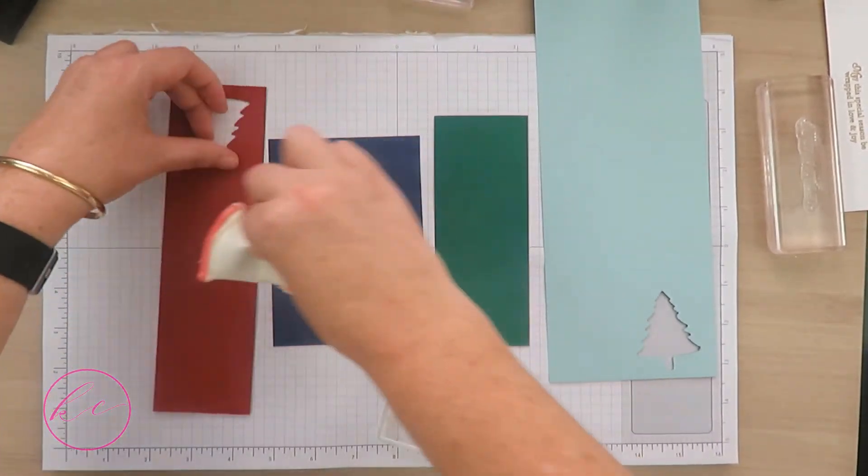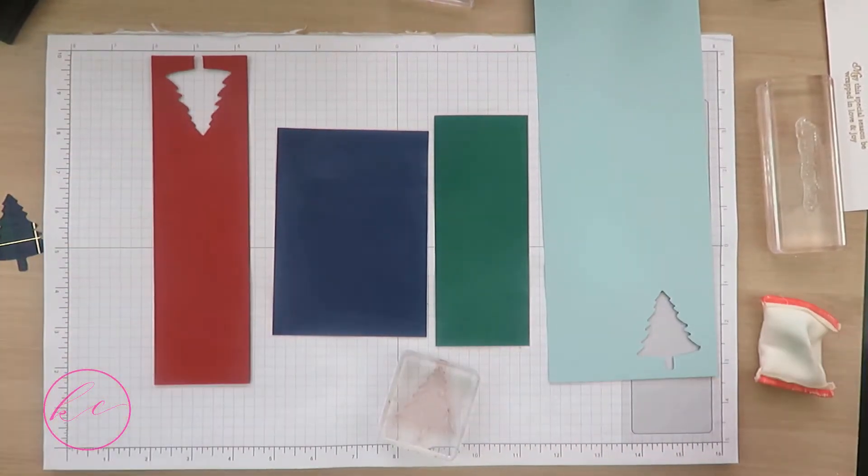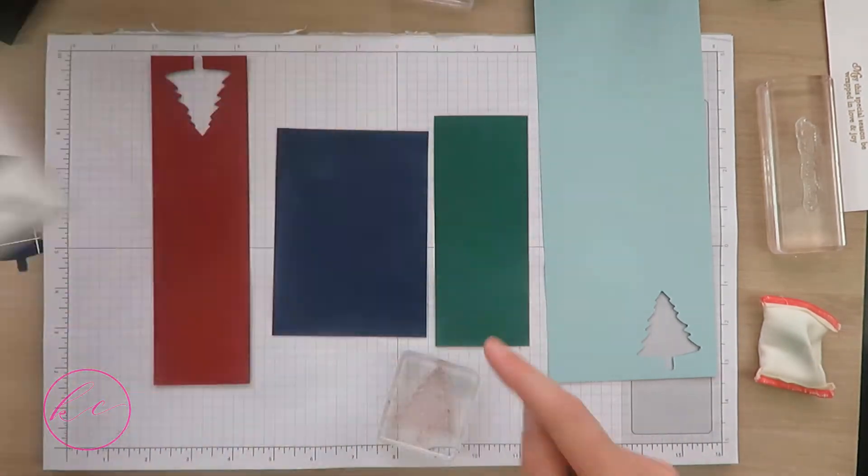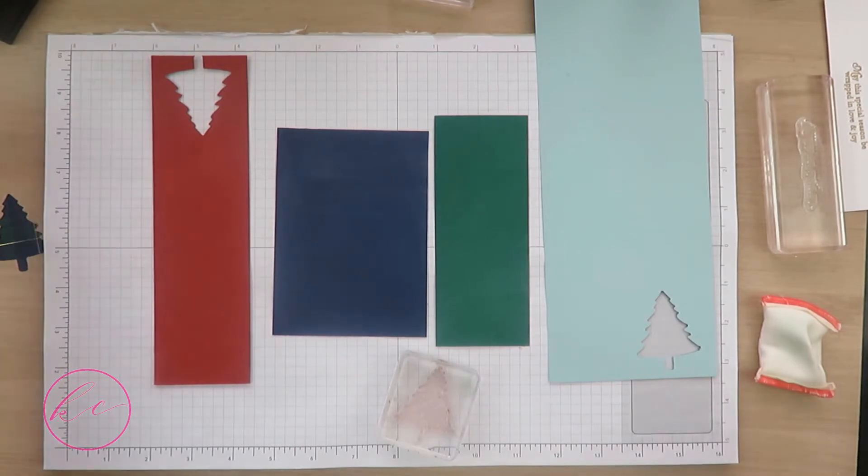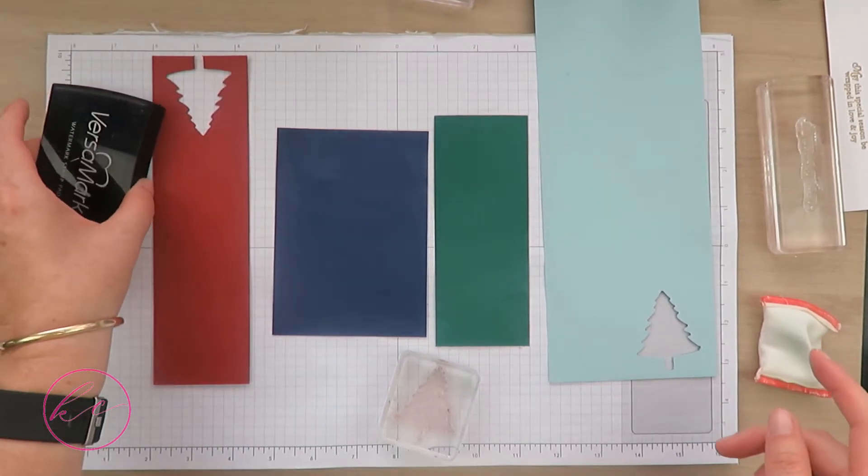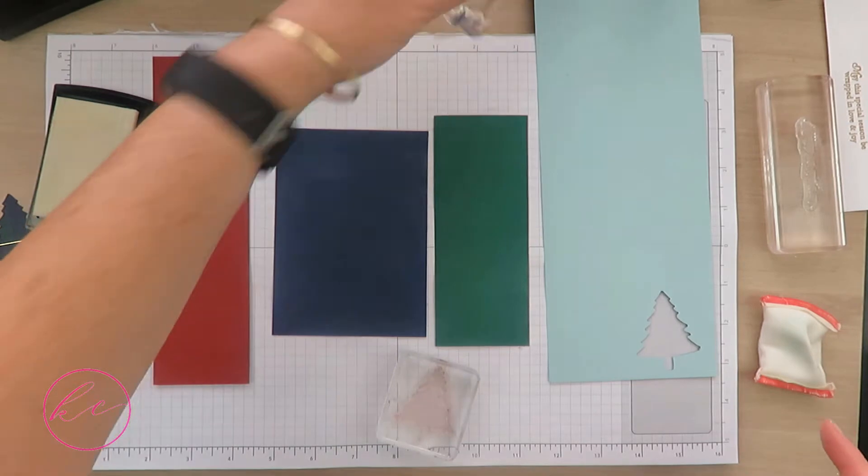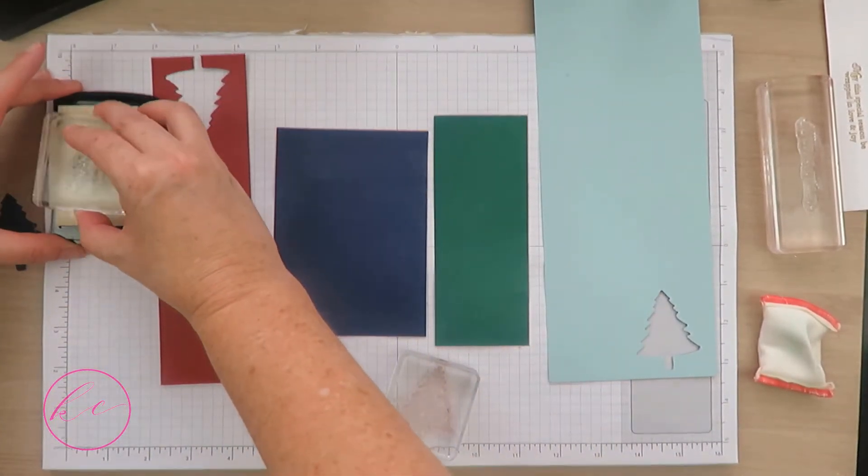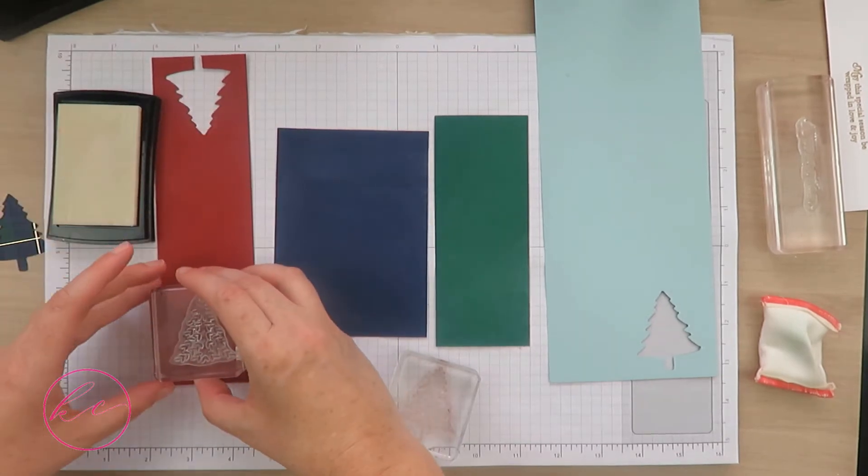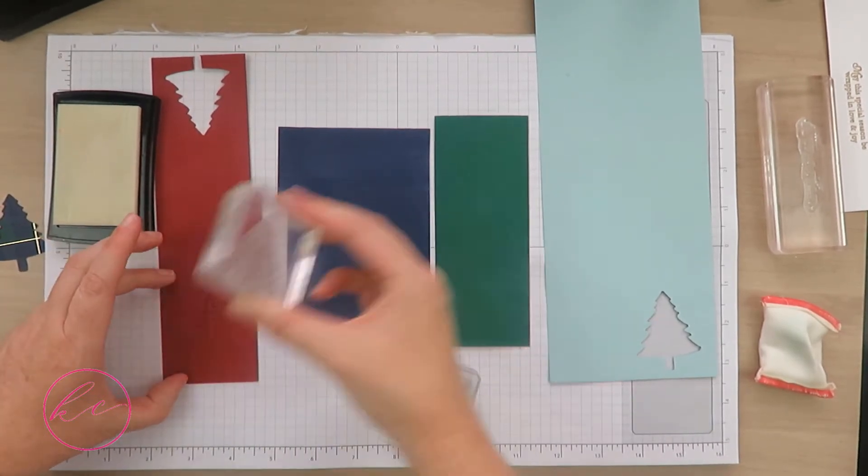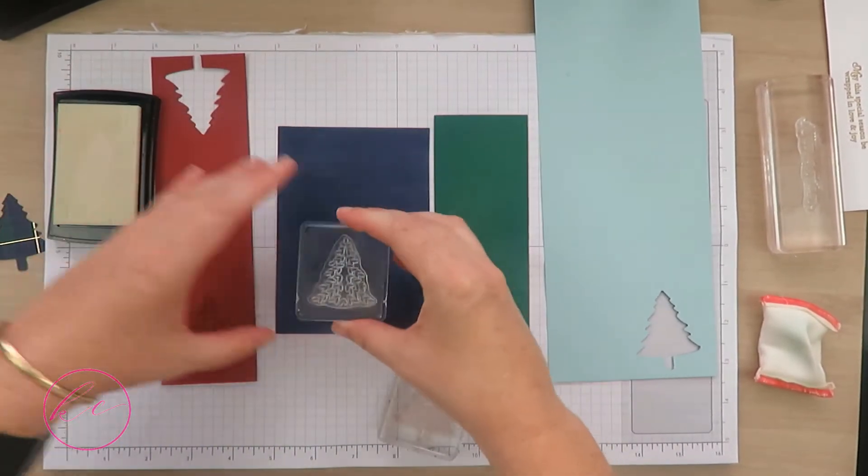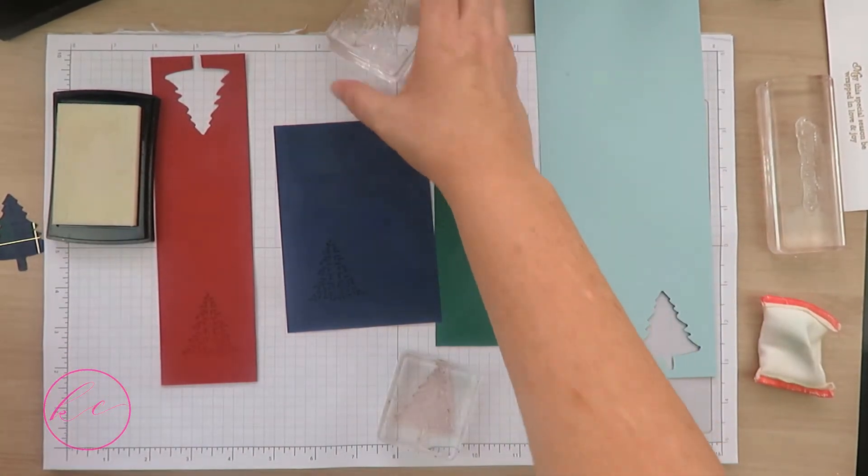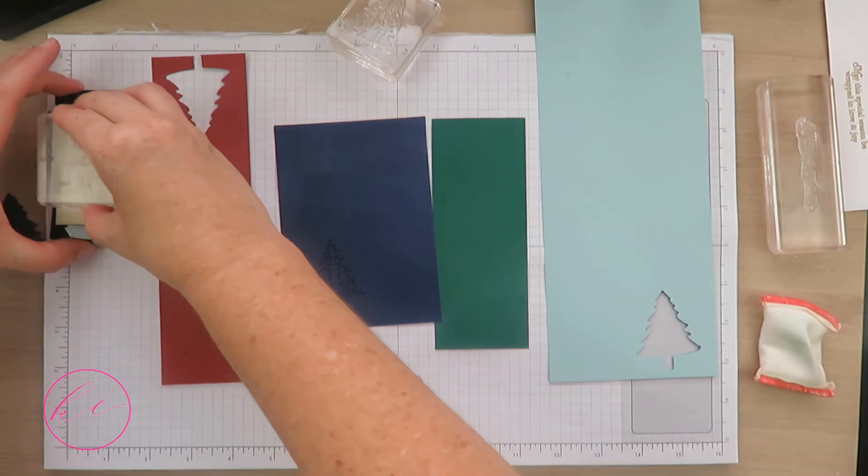I've got some tree images from my Perfectly Plaid stamp set already mounted to my blocks. I'm going to stamp one of each image twice. We've got that solid one here, and this is going on these two. I'll stamp one, stamp two, and then do the other image onto my Shaded Spruce.